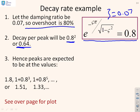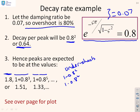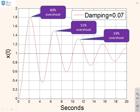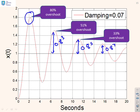The decay rate per peak is 0.8, so the ratio between successive peaks is 0.8² = 0.64. The first peak is 1.8, the next peak is 1 + 0.8³, then 1 + 0.8⁵, and so on. For the undershoots: 1 − 0.8², 1 − 0.8⁴, etc. On the plot: 80% overshoot for the first one, and successive distances are 0.8³, 0.8⁵, 0.8⁷ for overshoots and 0.8², 0.8⁴ for undershoots.